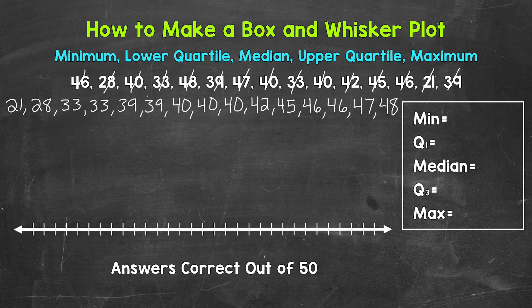Now there should be 15 numbers here, so let's double check and make sure. Counting them out: 1, 2, 3, 4, 5, 6, 7, 8, 9, 10, 11, 12, 13, 14, 15. Great, we have 15 numbers.